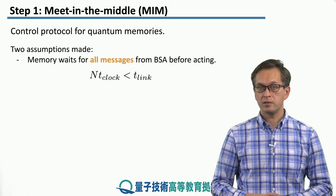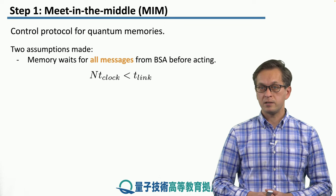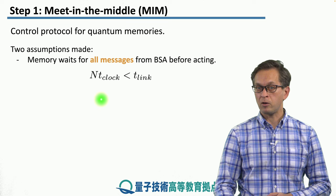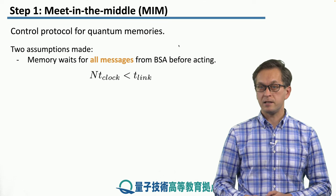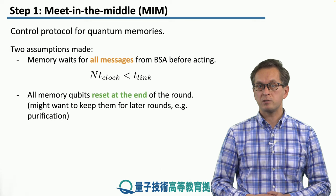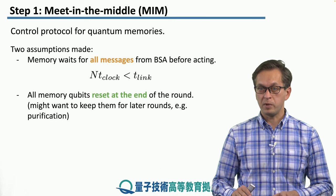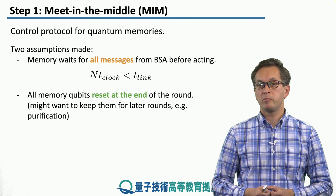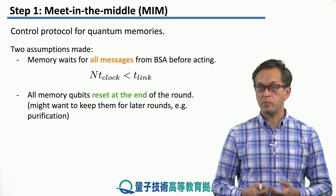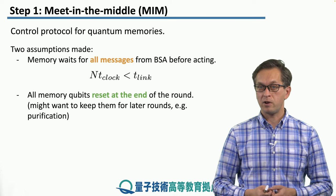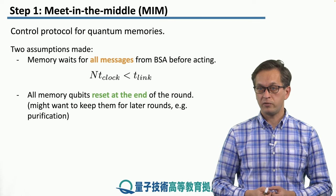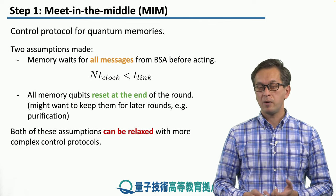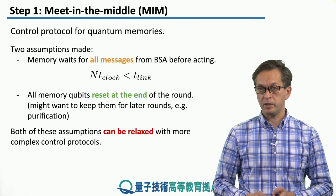Two assumptions were made here. First, the memories wait for all messages from the BSA to arrive — this is possible when the total time to generate N photons is less than T-link. Second, at the end of the protocol we reset all memories, meaning the entanglement is immediately consumed. This may not always be desirable; for purification, we may want to keep the entanglement from a successful round and only reuse memories that failed. Both assumptions are not a necessity and can be relaxed, though that requires a more complex control protocol.